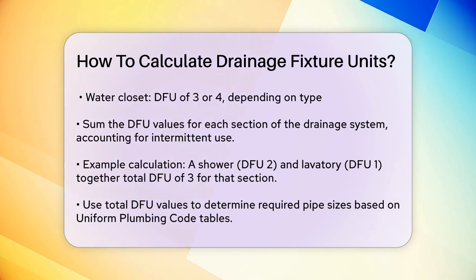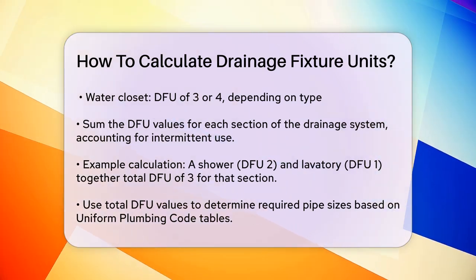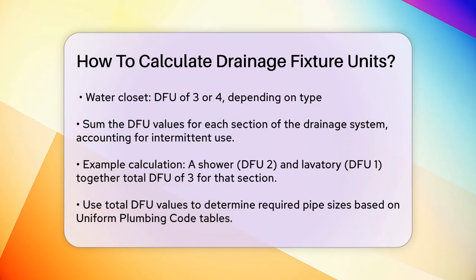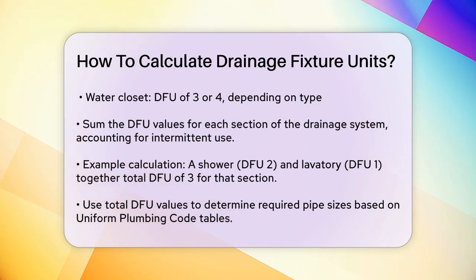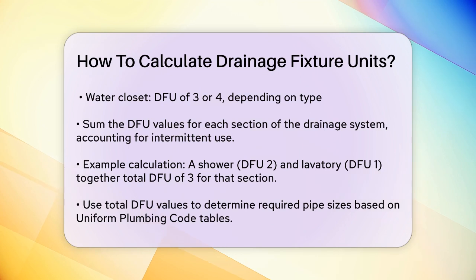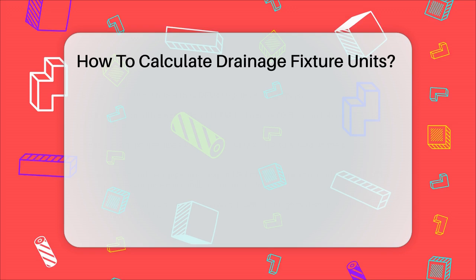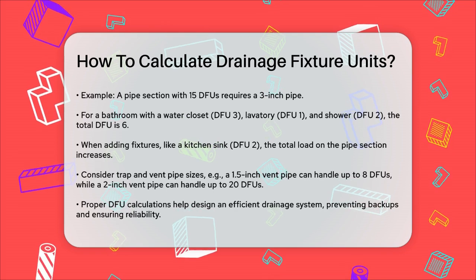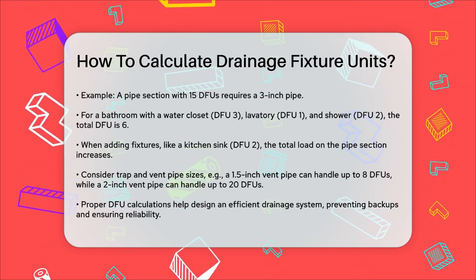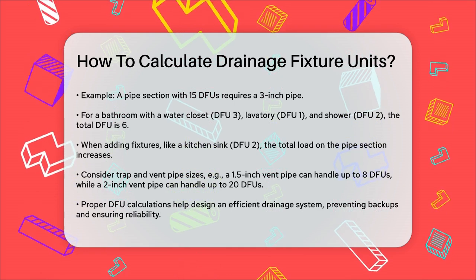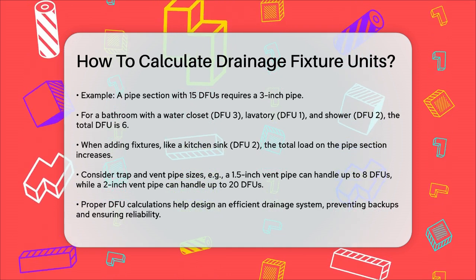Here's a practical example. If you have a bathroom with a water closet — DFU of three — a lavatory — DFU of one — and a shower — DFU of two — the total DFU for this bathroom would be six. If this bathroom is connected to a pipe that also serves another fixture, say a kitchen sink with a DFU of two, you would add these values together to get the total load on that pipe section.